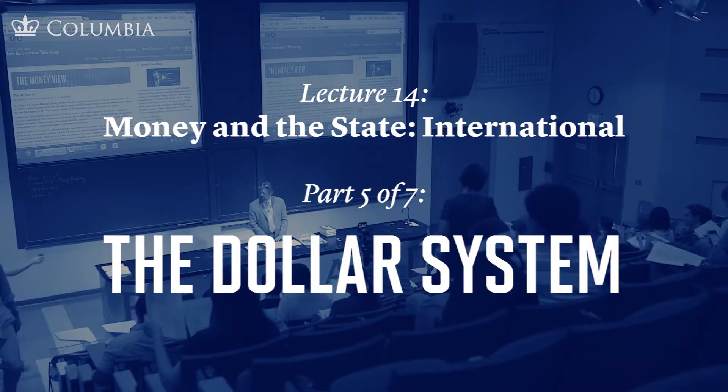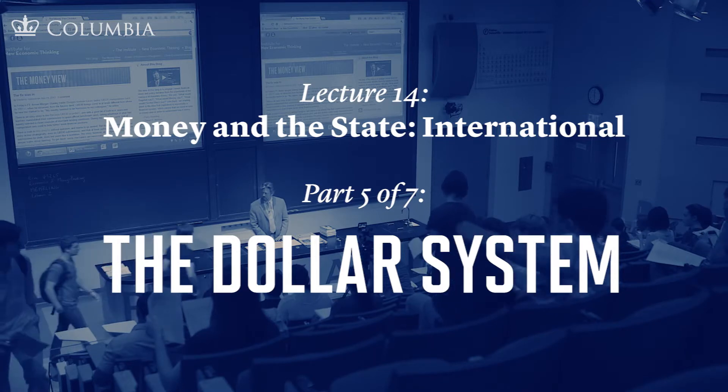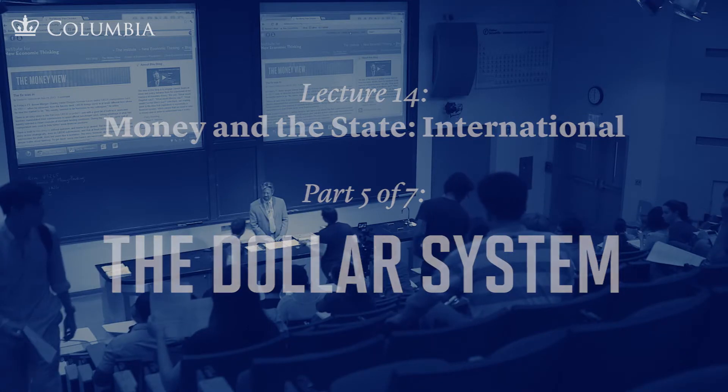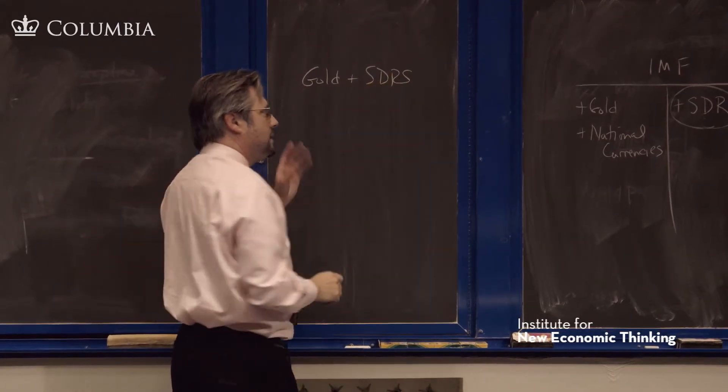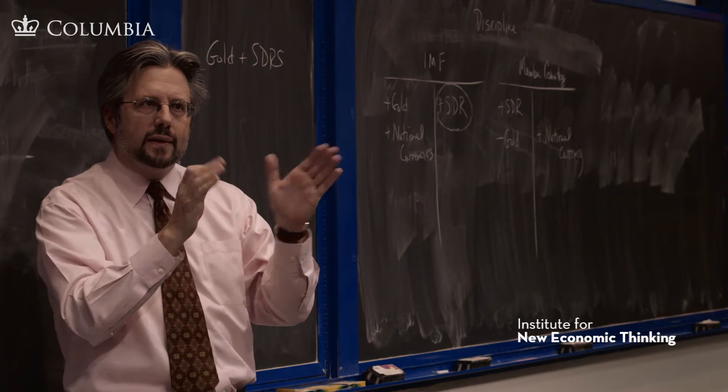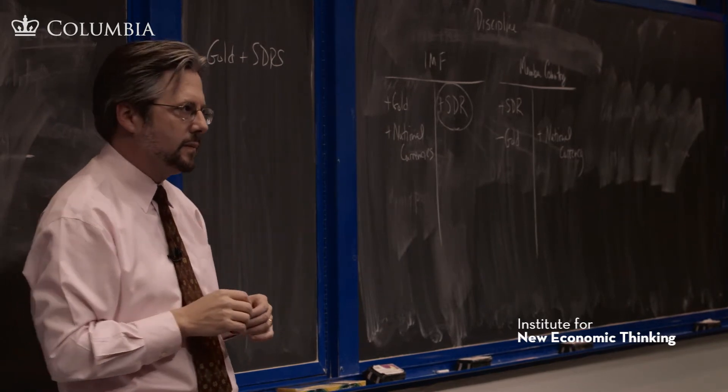Let's just review where we are in terms of the hierarchy. The hierarchy is that there's gold at the top plus SDRs, which is a sort of paper gold that's a fixed quantity that's been added to the system.